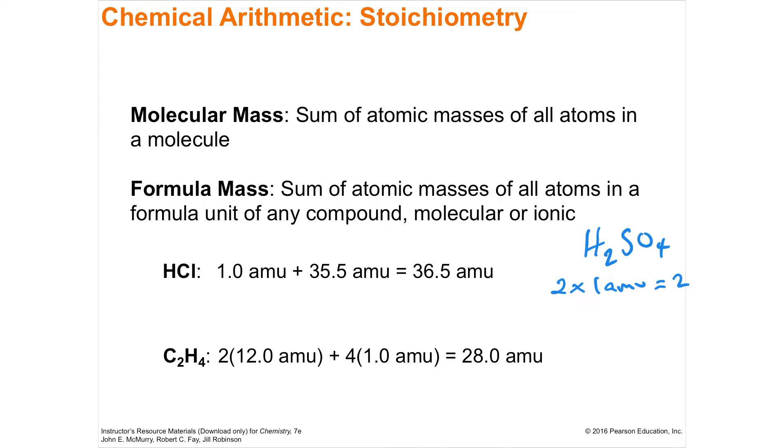I will have 1 times the sulfur, and the sulfur is 32.1 AMU equals 32.1, and then I'll have 4 times the oxygen, and the oxygen is 16 AMUs, and then I add those up. That would be the total weight of the molecule.